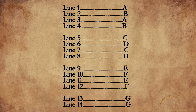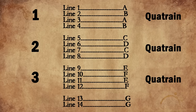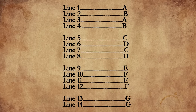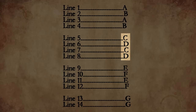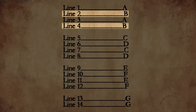A standard Shakespearean sonnet is made up of 14 lines — three stanzas of four lines each, called a quatrain, and a final two lines called a rhyming couplet. These 14 lines have a very specific rhyming structure represented by ABAB, CDCD, EFEF, GG. Where the letters are the same, those lines rhyme — so line one and line three rhyme, and line two and line four rhyme.